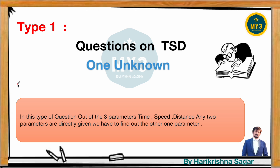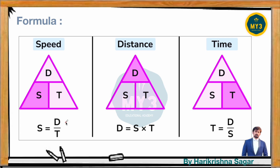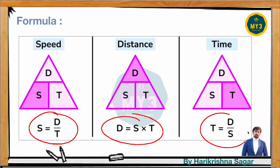Let's look at the Type 1 question. I am calling this type of question as '1 unknown' because out of the three parameters — time, speed, and distance — any two parameters are directly given, and we have to find out the other unknown parameter. They will give distance and time and expect you to find speed; or give distance and speed to find time; or give time and speed to find distance. If you know the relationships — speed = distance/time, distance = speed × time, time = distance/speed — you can easily solve them.